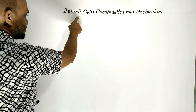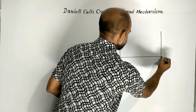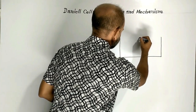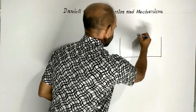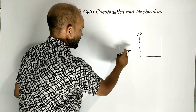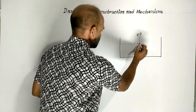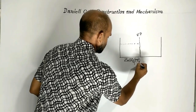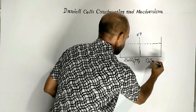Now let us see how Daniel cell produces electric current. A glass vessel or ceramic vessel is taken. In the middle of the vessel, a porous membrane is placed, which can be filter paper. This divides the vessel into a left compartment and a right compartment. In the left compartment, an electrolytic solution of zinc sulfate is taken, and in the right compartment, copper sulfate solution is taken.